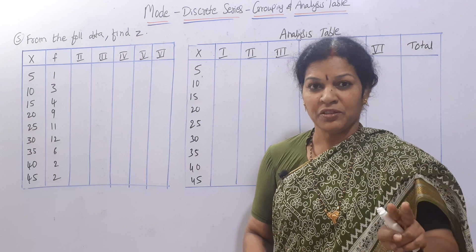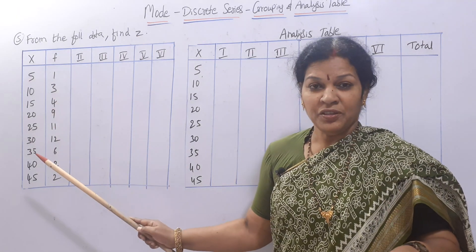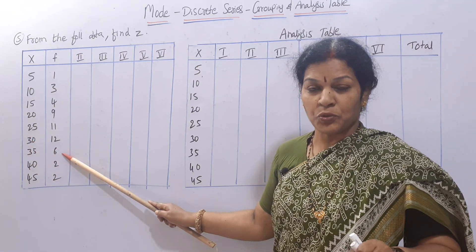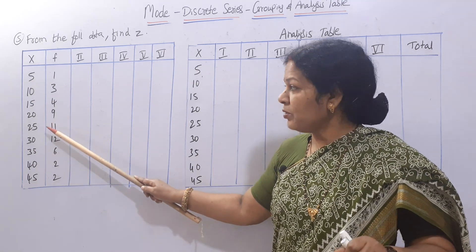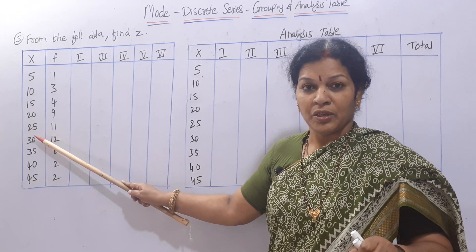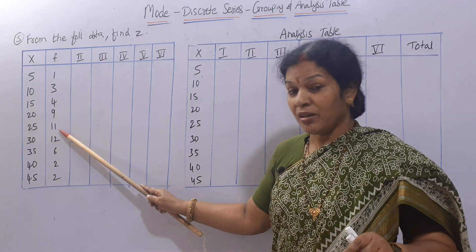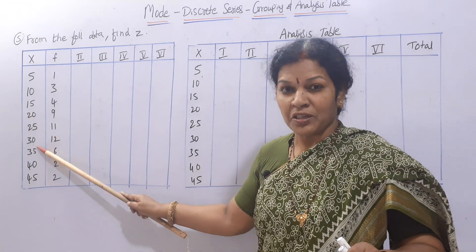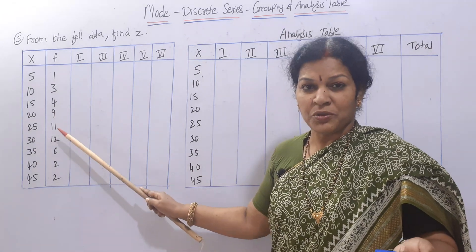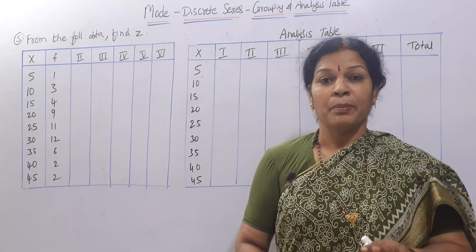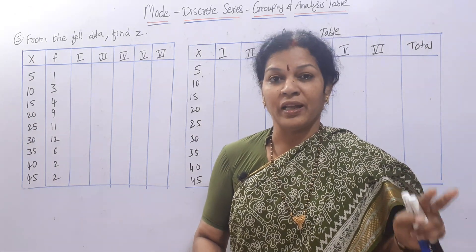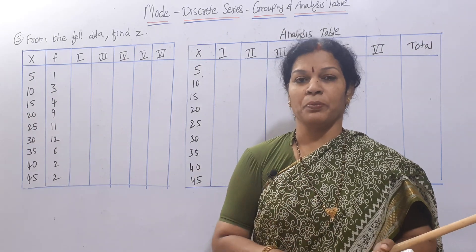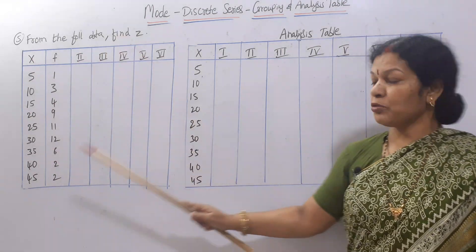By inspection we cannot say mode lies in 30, as the highest frequency is 12. Mode is possible to be at 25 also, because its concentration is almost near to 30 — that is, 11 versus 12, almost equal. In such cases it is better to prepare a grouping and analysis table.